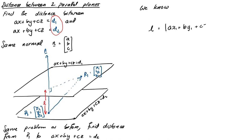L is going to be the absolute value of AX1 plus BY1 plus CZ1 minus D2 all divided by the square root of A squared plus B squared plus C squared. D2 on the top is because we're looking at the second plane. But the first part of the numerator, AX1 plus BY1 plus CZ1, that just gives us D1 for the same reason as in our previous problem.